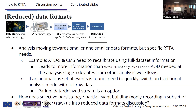The reduced data format continues this discussion: analyses are moving toward smaller and smaller data formats, but there are specific needs of real-time analysis due to calibration, so this deviates from other analysis workflows — analyses that paradoxically have smaller formats but still use AOD rather than N-tuples. Also, if you find an anomalous set of events, you likely want more information and need to quickly switch on a full raw data analysis mode — you might want to park the data preemptively. The question is how selective persistency or partial event building — collecting a mixture of raw and trigger data — ties into the reduced data format discussion.